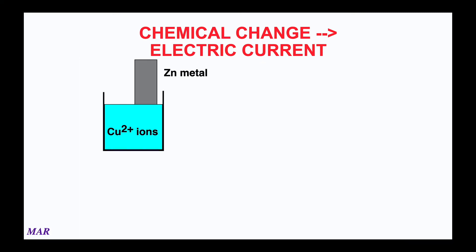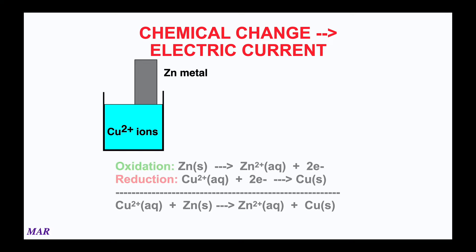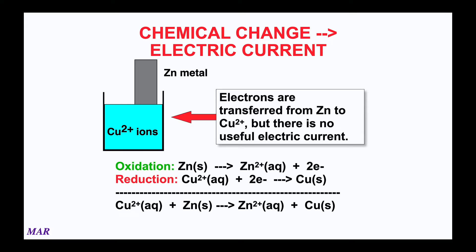This is a picture showing the zinc metal being placed directly in the blue copper two plus ions, and the overall reaction is you're making copper metal — zinc is turning into zinc two plus. Again, this is great if you wanted to make copper metal, but there's no useful electric current. And in what we're going to start talking about, having a useful electric current offers some pretty cool possibilities for different kinds of mechanisms in chemistry.